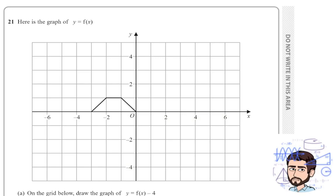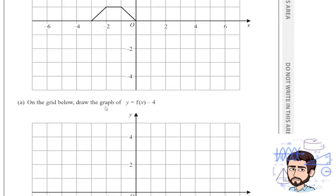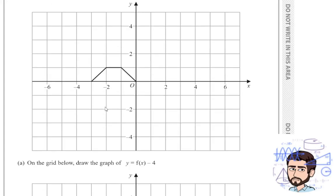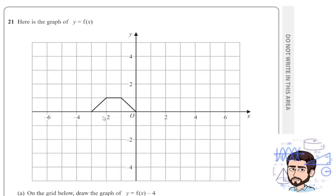Here is a graph of y equals f of x and it's a trapezium on the top left quadrant. On the grid below, draw the graph of y equals f of x minus 4. Well this is just understanding graph transformations. Now if an operation is happening outside the brackets of f of x, and this is how we use the f of x notation.